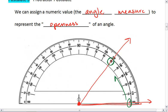My other side hits it at 50, so this angle is 50 degrees. It's letting us give a numeric value to represent how open this angle is.